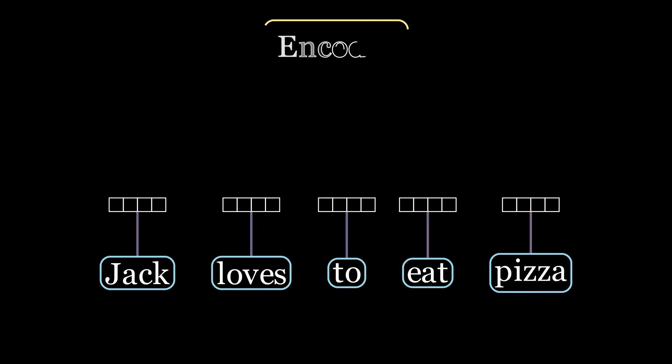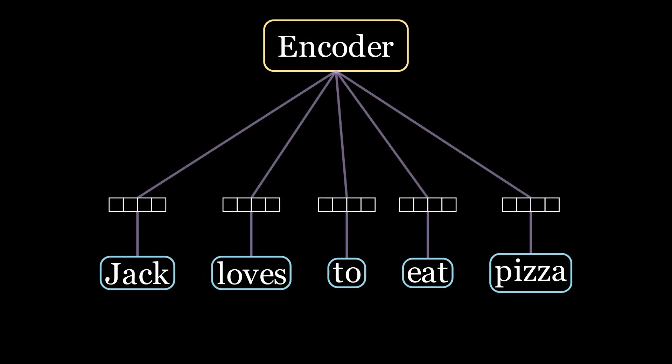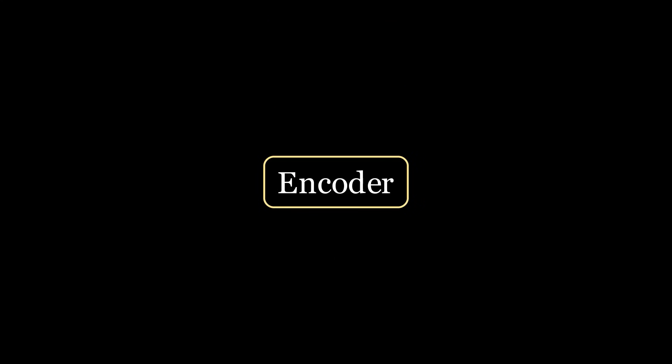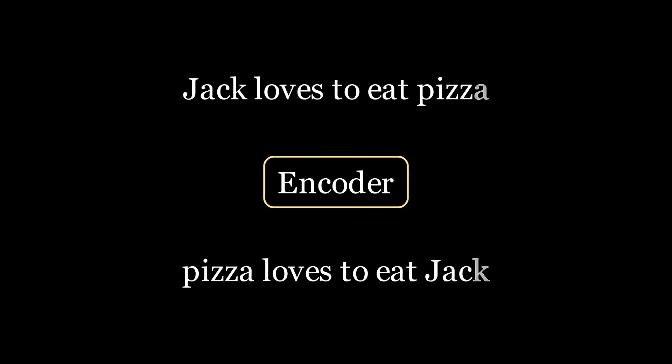Jack loves to eat pizza. We take this sentence, break it down into its respective tokens, then convert these tokens to embeddings. Notice that PE is usually added after this step. Let us skip that. These embeddings are then sent to the encoder. If we look inside the encoder, the sentence Jack loves to eat pizza or pizza loves to eat Jack is the same.